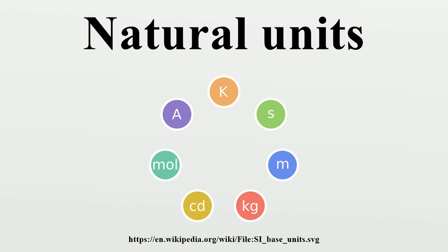Planck units are defined by C = ℏ = G = K = k_B = 1, where C is the speed of light, ℏ is the reduced Planck constant, G is the gravitational constant, K is the Coulomb constant, and k_B is the Boltzmann constant. They only refer to the basic structure of the laws of physics: C and G are part of the structure of space-time in general relativity, and ℏ captures the relationship between energy and frequency which is at the foundation of quantum mechanics. This makes Planck units particularly useful and common in theories of quantum gravity, including string theory.